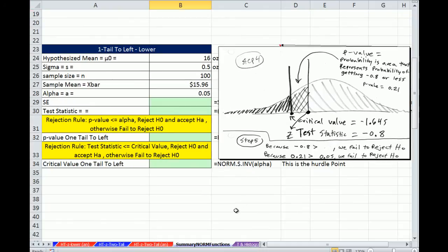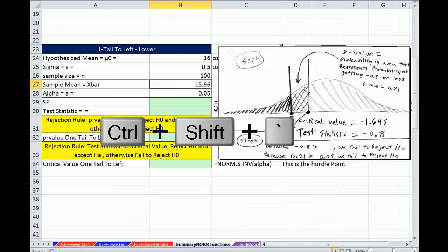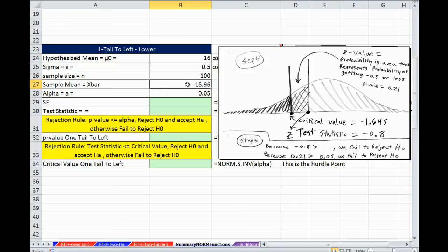One tail left on the lower. We have 16 ounces of ketchup. We did a sample and got bottles of ketchup less than the hypothesized mean. This is a test on the left, the lower end.